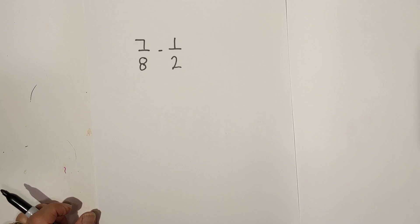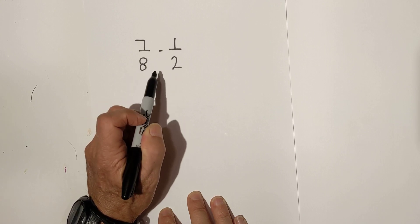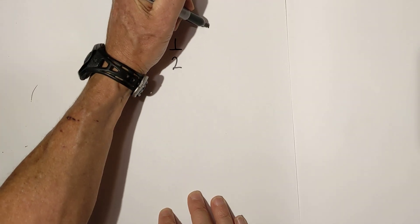Let's work the next problem. Now let's subtract 7/8 minus 1/2. Again, we have unlike denominators, so we're going to create a factor tree for each.